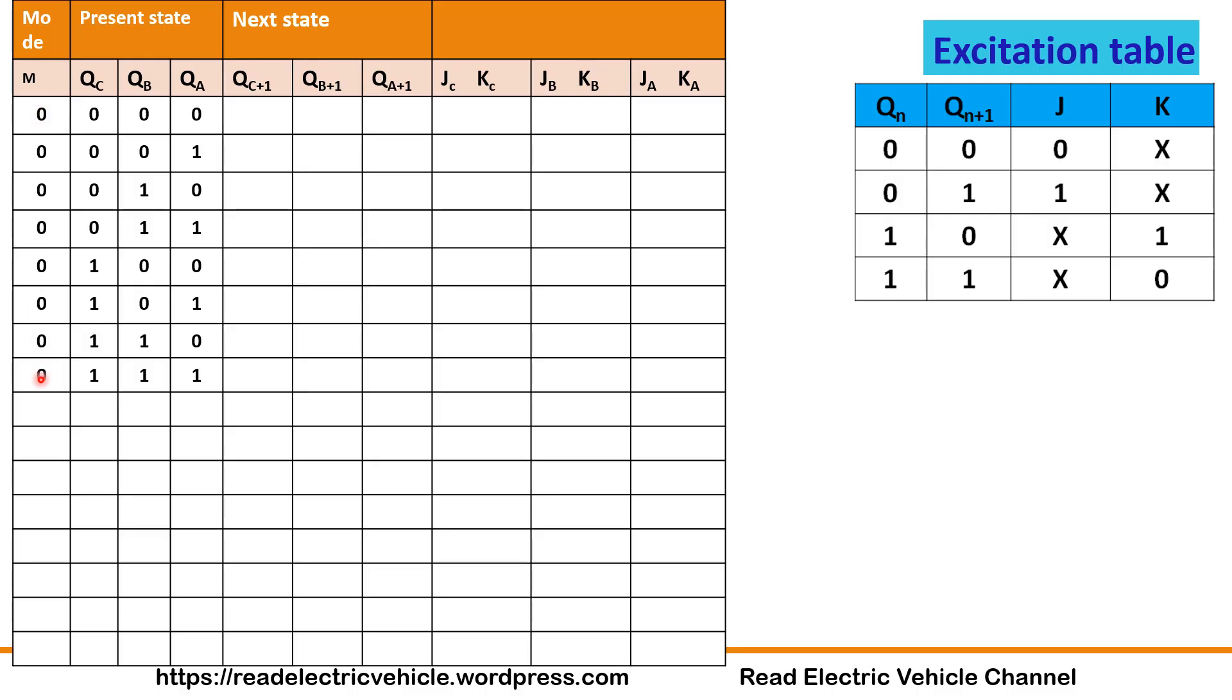If M=0 it will act as up counter. Here I have taken M=0. It starts from 0, 1, 2, 3, 4, 5, 6 and 7. Totally 8 states. If this is the present state, what will be the next state? For 0 the next state is 1. For 1 next state is 2, then 3, 4, 5, 6, and after 7 it should come to 0.